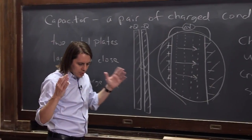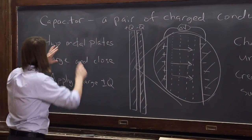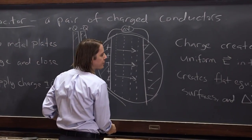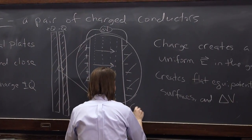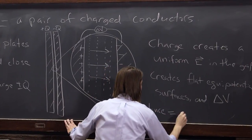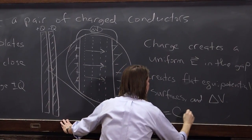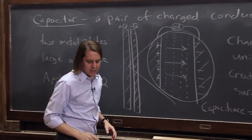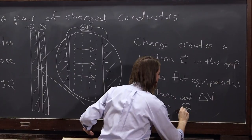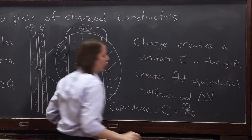Now, what is the capacitance then? So the capacitance, a capacitor is a pair of charged conductors. But the capacitance equals big C, and we define it to be Q, the magnitude of the charge on each plate, over delta V.